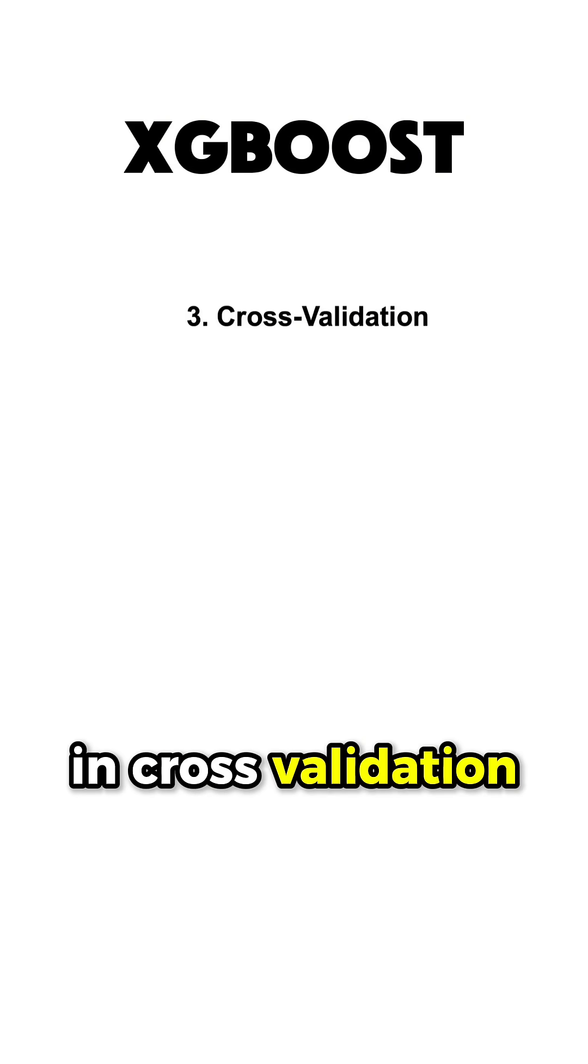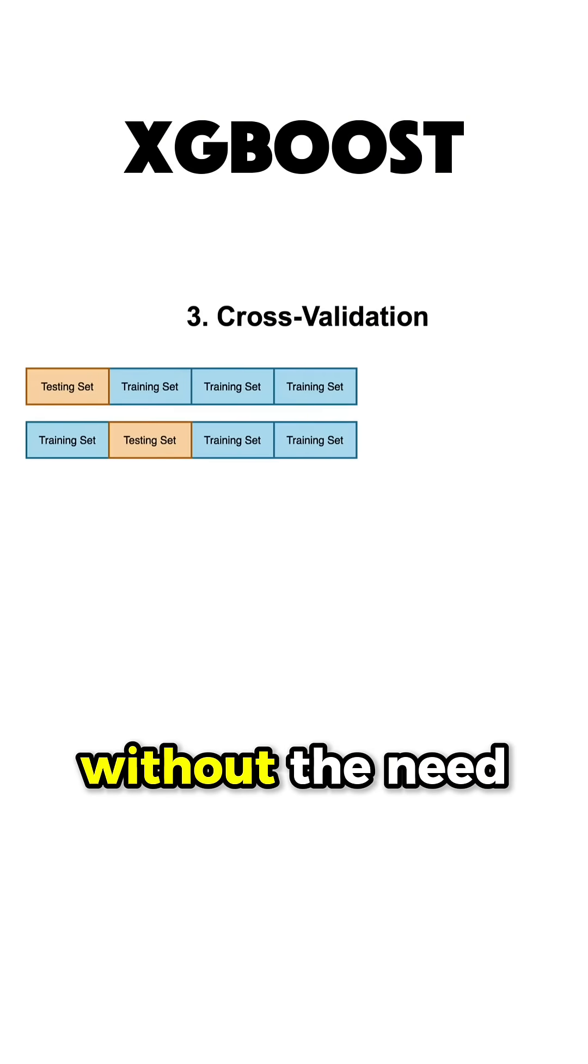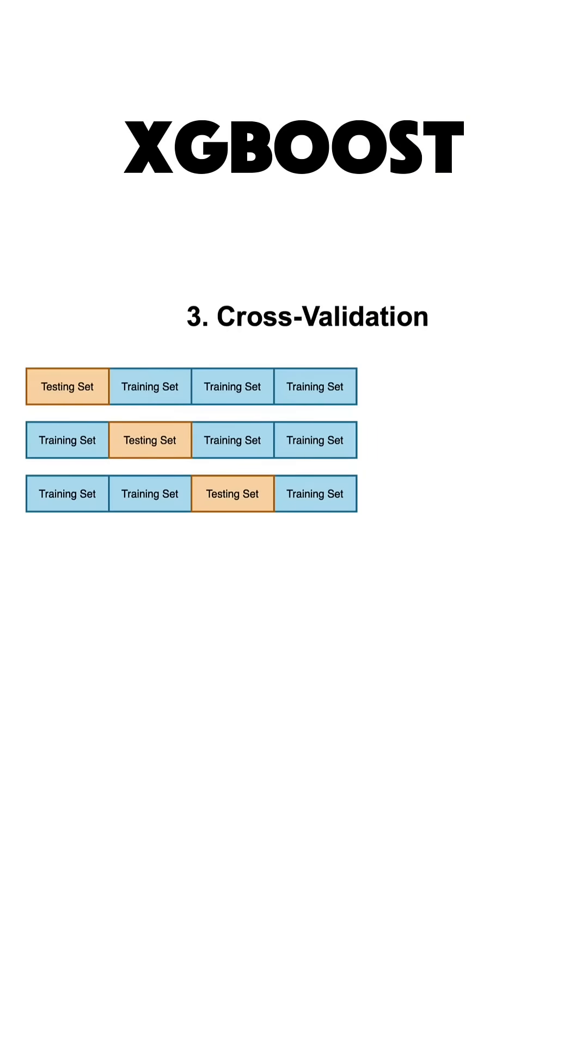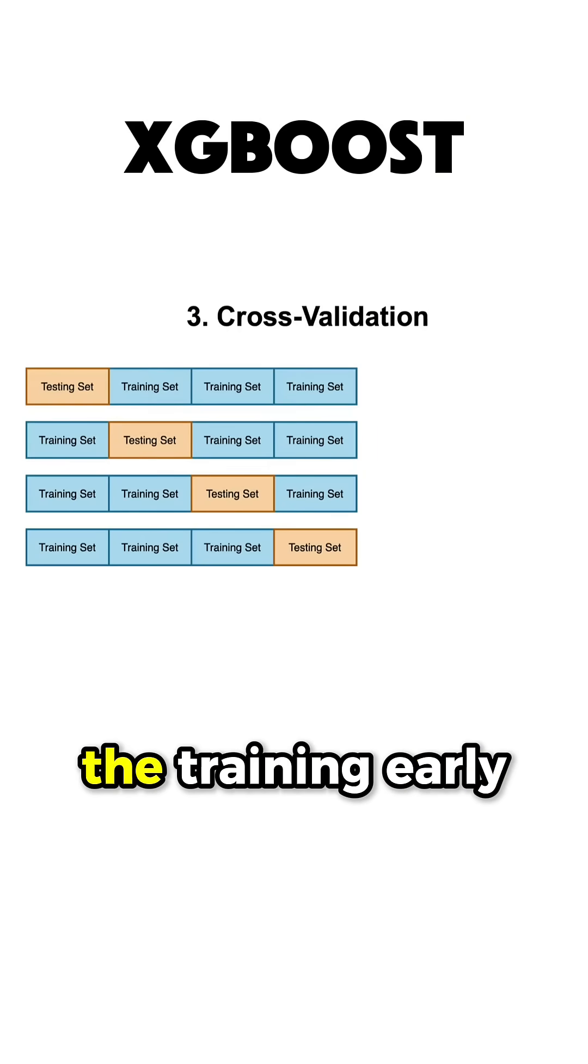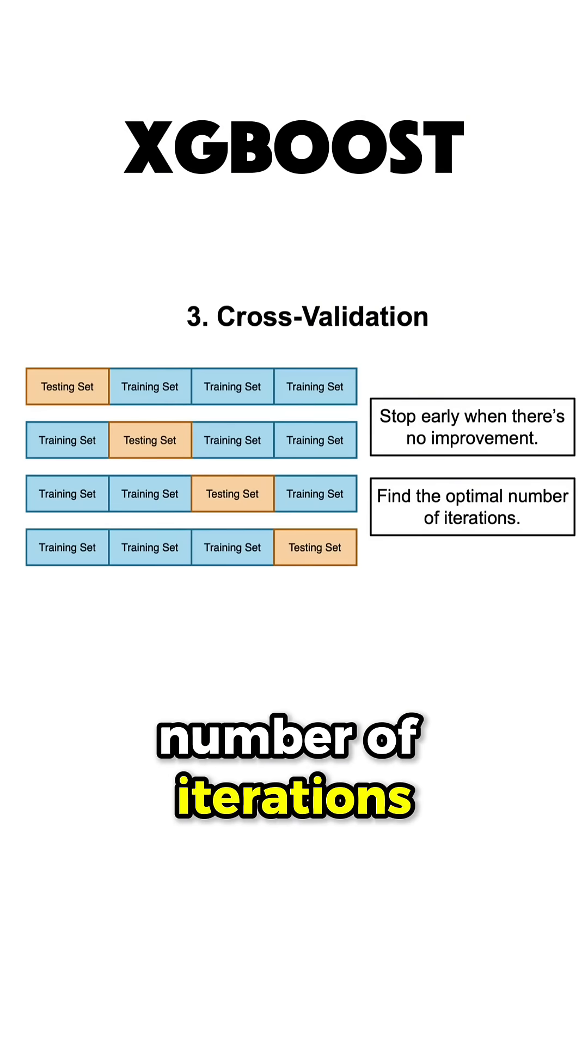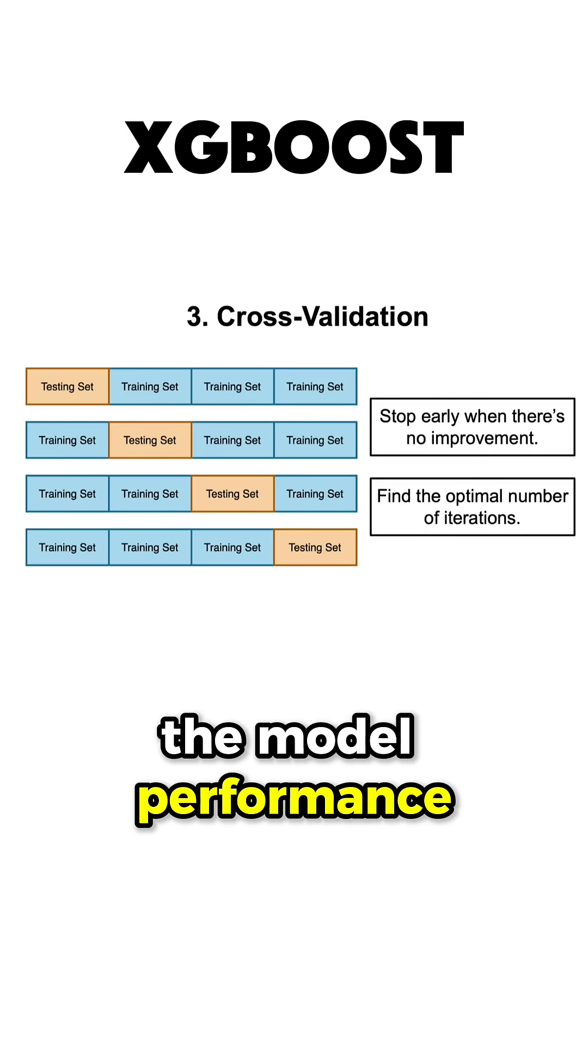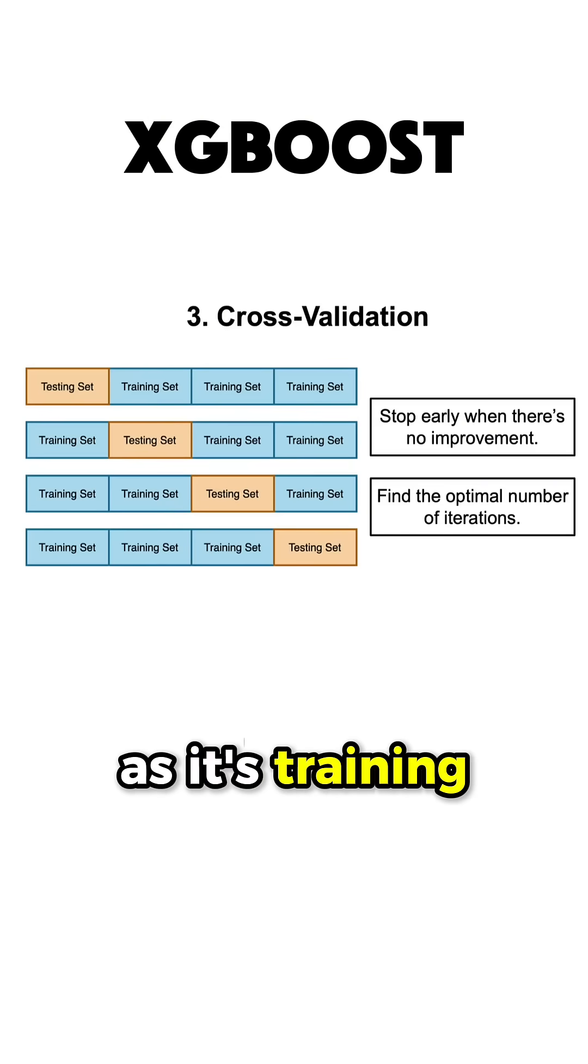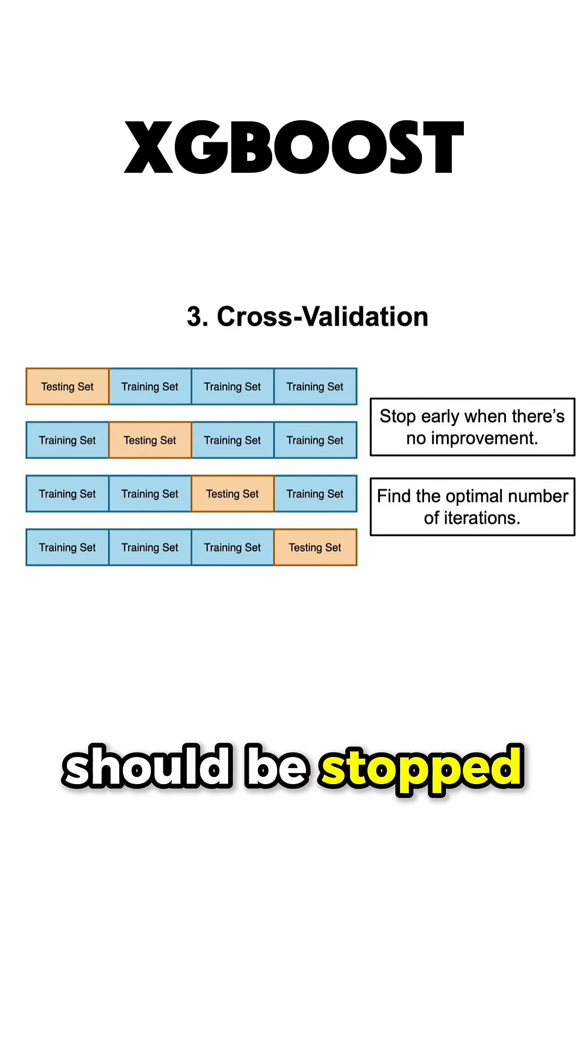It has built-in cross-validation capabilities, allowing you to perform cross-validation without the need for external libraries. This capability allows you to stop the training early when you no longer see any benefits, or it can help you find the optimal number of iterations by looking at the model performance as it's training and see at what point it should be stopped.